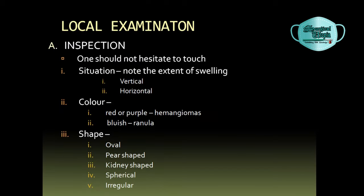The local examination will include inspection, in which the extent of the swelling should be noted both in the horizontal and vertical direction. The color of the swelling — for example, in cases of hemangiomas, the color will be more red to purple, and in cases of ranula, it will be more bluish in color.